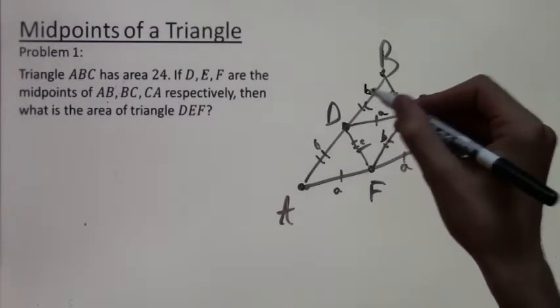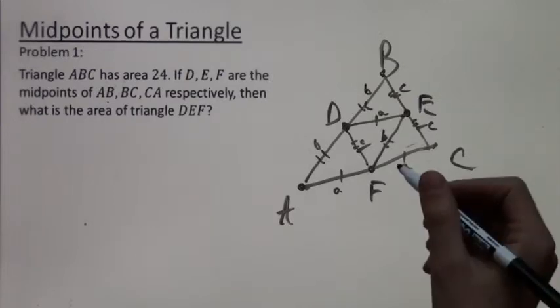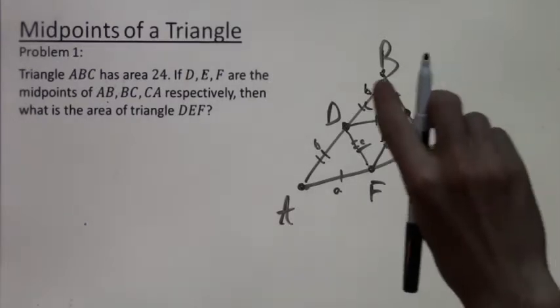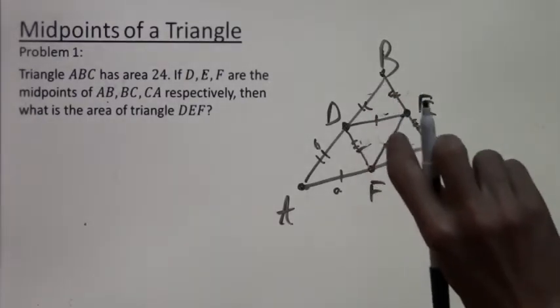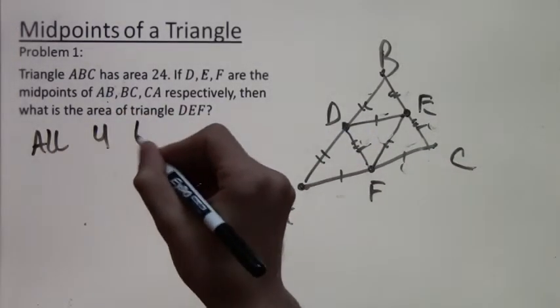And then we can see that all four triangles inside of the big one have side lengths A, B, and C. So in other words, they're all the same triangle, just shifted around, rotated, and put together conveniently.